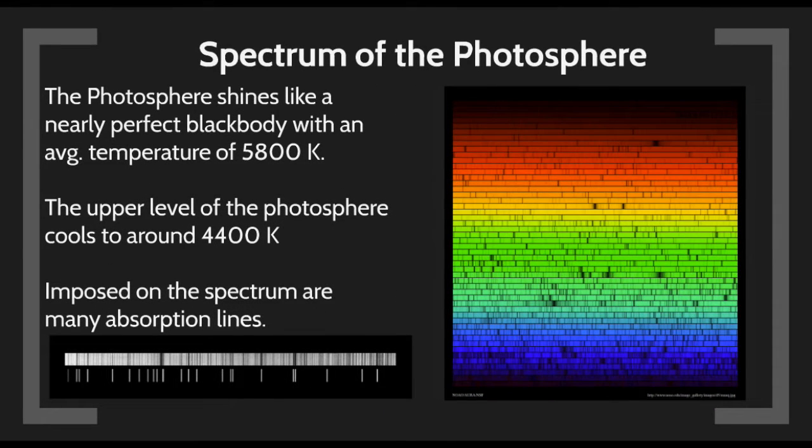If I look at the Sun through a spectrometer, I see an absorption line spectrum. The black body spectrum tells us the photosphere has an average temperature of 5,800 degrees Kelvin, but the upper atmosphere cools to around 4,400 Kelvin. Since I have cooler gas between me and the hotter gas, I get an absorption line spectrum. This spectrum tells us the composition: hydrogen, helium, and 1% heavier metals.